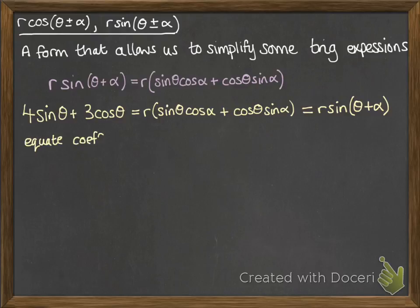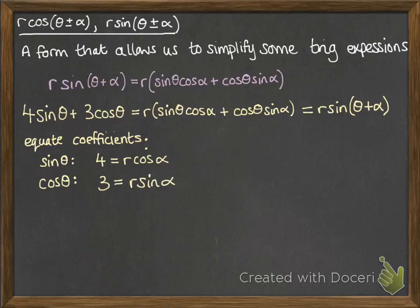Okay, so we equate coefficients, which would help us to work out what r and alpha need to be. So sine theta, on the left hand side is 4, and on the right hand side is r cos alpha. So those are the coefficients of sine theta. The coefficients of cos theta, on the left hand side we've got 3, and on the right is r sine alpha.